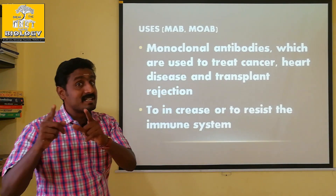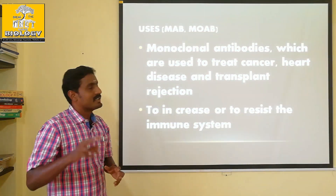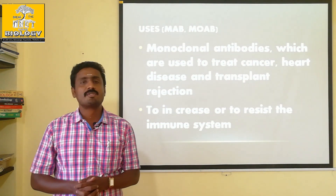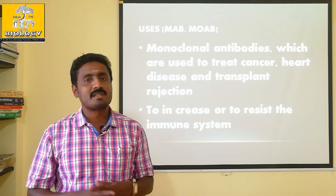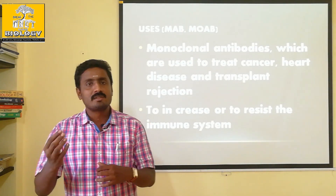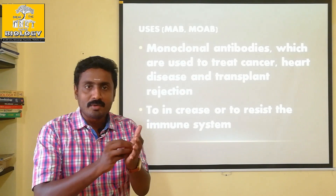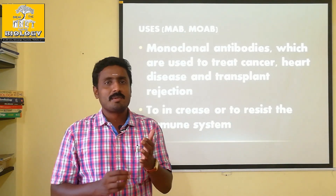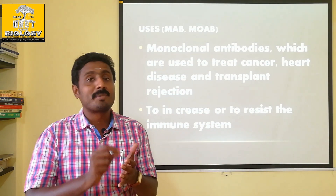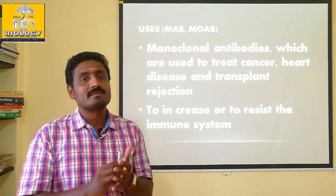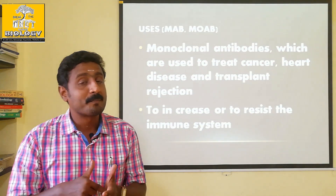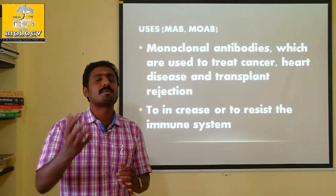We need to raise or suppress the immune system depending on the situation. In transplant rejection, we bring down the immune system. The Major Histocompatibility Complex (MHC) is responsible for this immune response. If we reduce the immune system activity, we can do transplantation successfully.